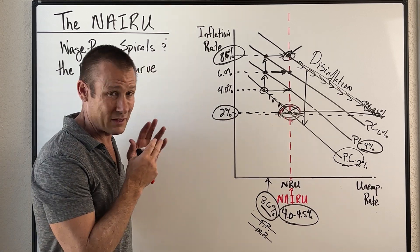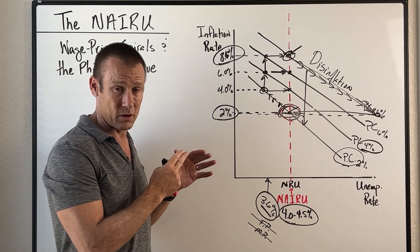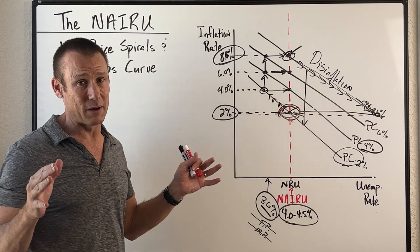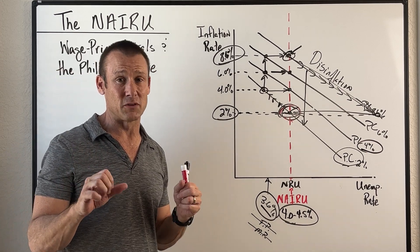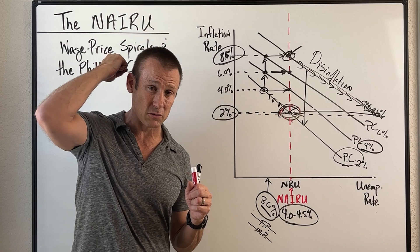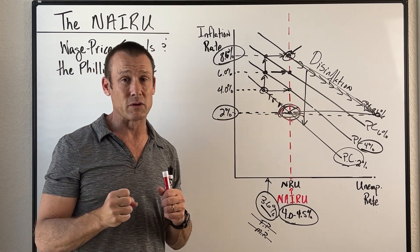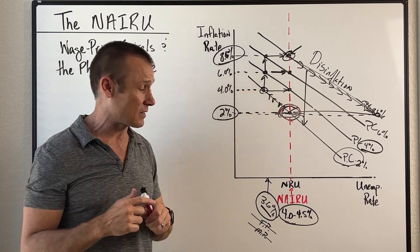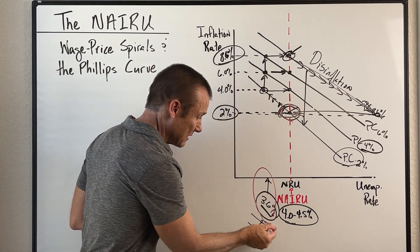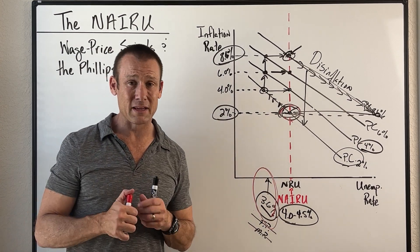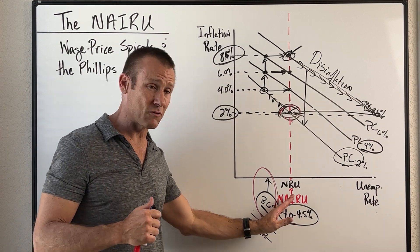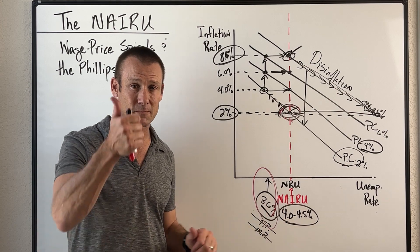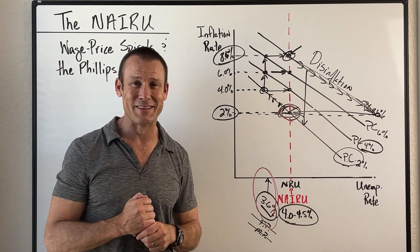So in this video we talked about wage-price spirals, the NAIRU, the Phillips curve model, fiscal policy, monetary policy, and running the economy hot. We probably shouldn't run that economy too hot — the NAIRU might be the Goldilocks zone where we should be most of the time. Hope you enjoyed it; see you in the next video.